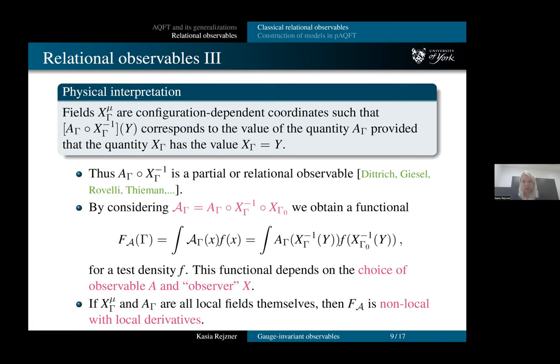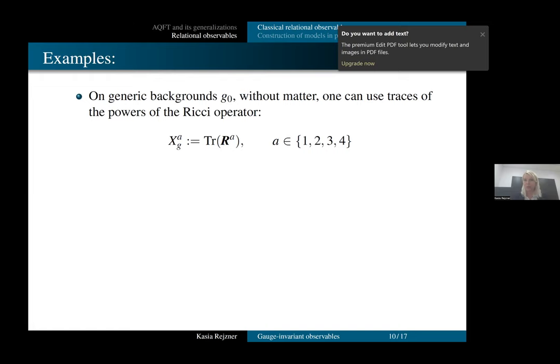And interestingly enough, they can both be quantized together in a coherent way. And needless to say, this object is non-local, but it's actually, if both these things are constructed locally, so if x and a are local functions of γ, then it is non-local, but it's not badly non-local. So it can still be quantized using methods of perturbative AQFT. So this is the sort of theory behind things.